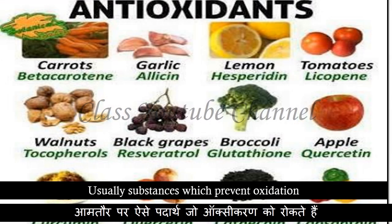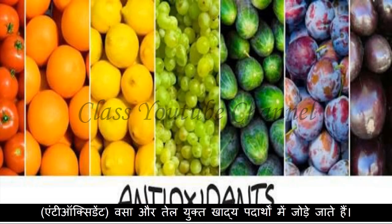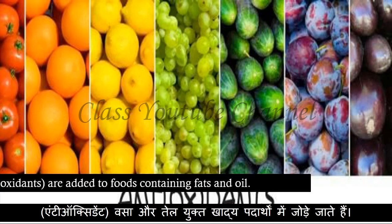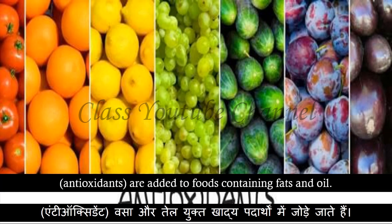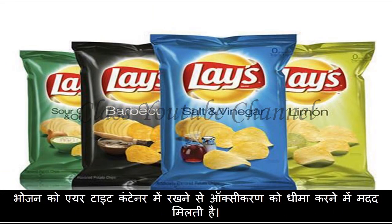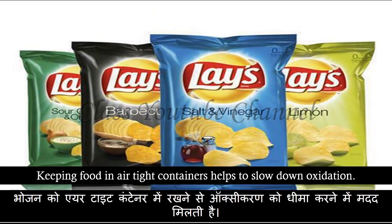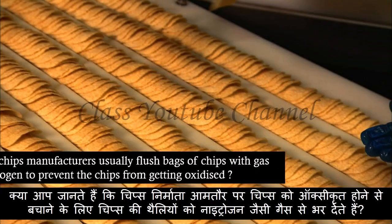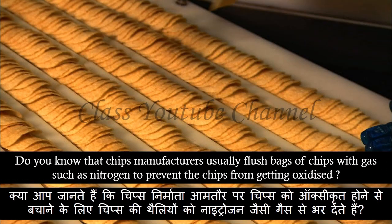Usually substances which prevent oxidation, called antioxidants, are added to foods containing fats and oil. Keeping food in airtight containers helps to slow down oxidation. Chips manufacturers usually flush bags of chips with gas such as nitrogen to prevent the chips from getting oxidized.